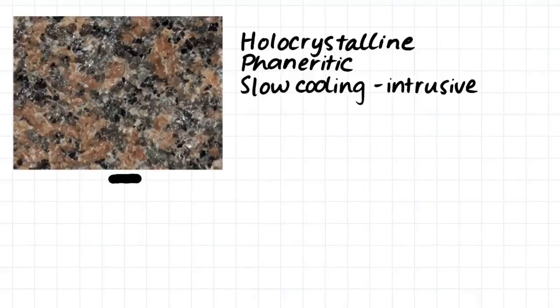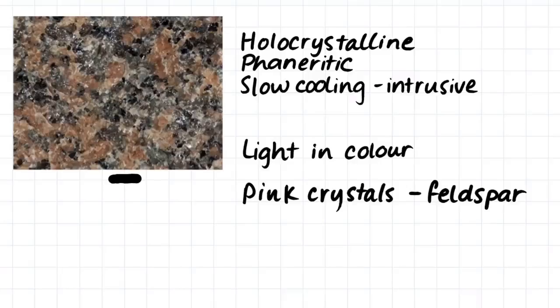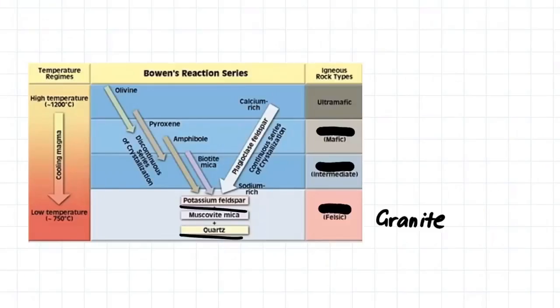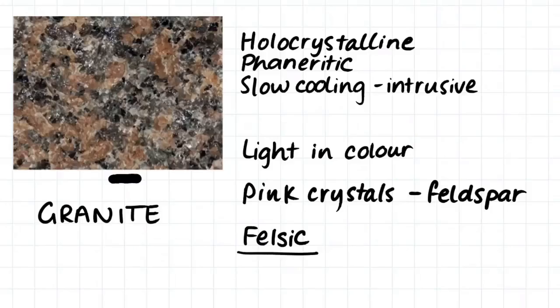This sample here, like the granodiorite, is holocrystalline and has a phaneritic texture, indicating it also cooled slowly and is an intrusive igneous rock. It is light in color and has pink crystals which indicates that it contains feldspar rather than just quartz. If we have a look at the minerals contained within this sample and have a look at them in relation to Bowen's reaction series, we would say that this sample is definitely felsic. We would say that the sample contains potassium feldspar and quartz and is therefore a granite or a granitoid. All samples containing these sorts of properties are usually granite samples.